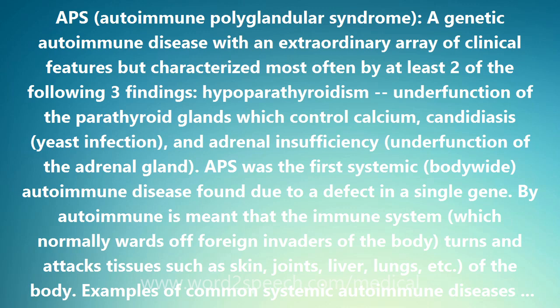In 1997, a novel gene was identified that mapped to chromosome region 21q22.3. The gene was named AIRE for autoimmune regulator. Changes in the AIRE gene are responsible for APS. APS is inherited as a recessive trait such that a child with the disease has received two changed, mutant, AIRE genes, one from each parent.